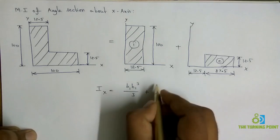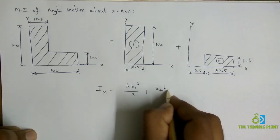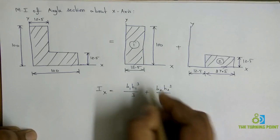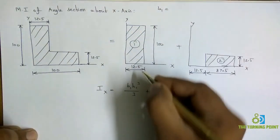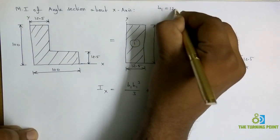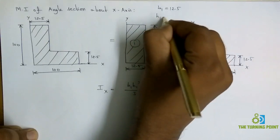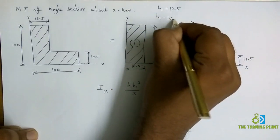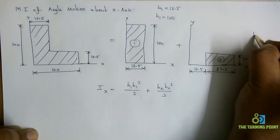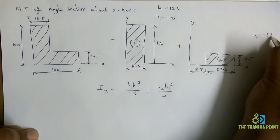plus for the second one, B2H2 cube divided by 3. Here base of the first geometry, first rectangle is 12.5, height of the first rectangle is 100, and base of the second rectangle is 87.5.